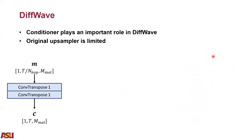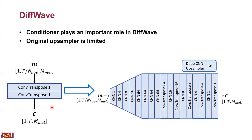We notice that the conditioner, generated by the upsampler from the input mel spectrum, plays a very important role in DiffWave. The original upsampler is limited, as shown in the left figure — it only contains two layers of 2D convolutional transpose layers with one channel. It does not have enough capacity to provide a good conditioner for synthesizing original speech from the degraded speech mel spectrum. So we stack multiple CNN layers and convolutional transpose layers to form a DiffWave-CNN upsampler, as shown in the right figure.